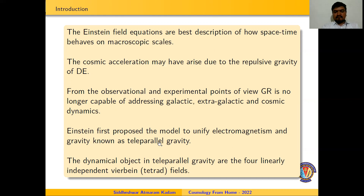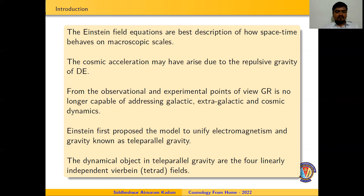This modification is called the teleparallel equivalence of General Relativity. The dynamical objects in teleparallel gravity are the four linearly independent vierbein tetrads, while in GR the dynamical objects are the metric coefficients. In GR, the Ricci scalar R is used to represent gravitational interaction, while in teleparallel gravity the torsion scalar T is used.